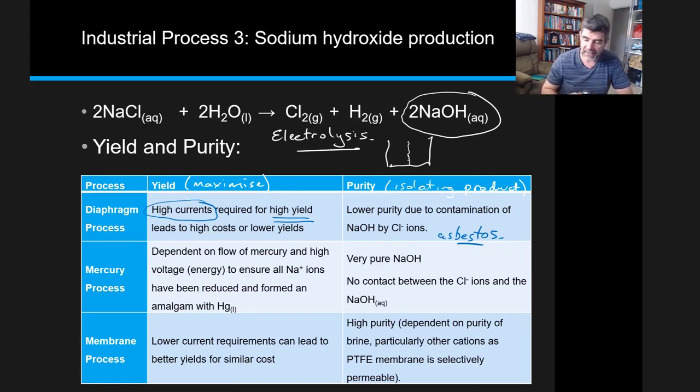The other problem was that the membrane allowed migration of some chloride ions across, which meant that in the cell that should have just been sodium hydroxide, there were chloride ions as well. That is one of the additional species in our product that reduces purity.